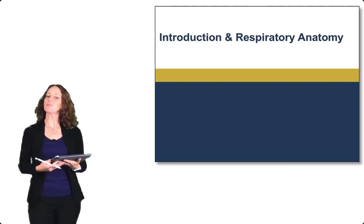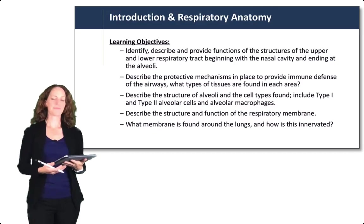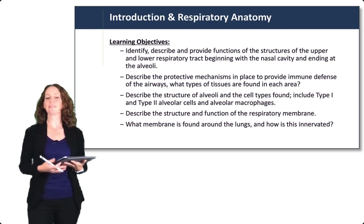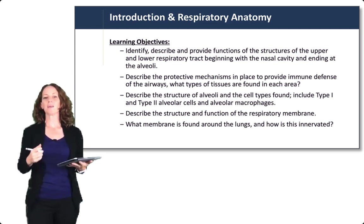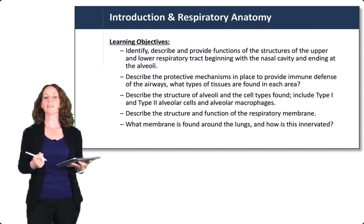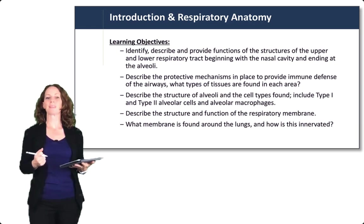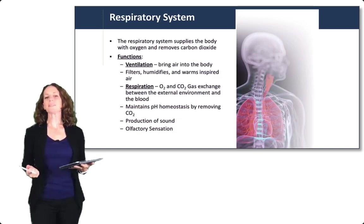This lecture is the introduction to the pulmonology unit and respiratory anatomy. We will identify and describe the structures of the upper and lower respiratory tract, starting at the nasal cavity and ending down in the air sacs of the lungs — the alveoli. We will talk about the protective mechanisms in place to provide immune defense of the airways, and especially the structure of the alveoli and the respiratory membrane. We will finish by talking about the membrane around the lungs and how it's innervated.